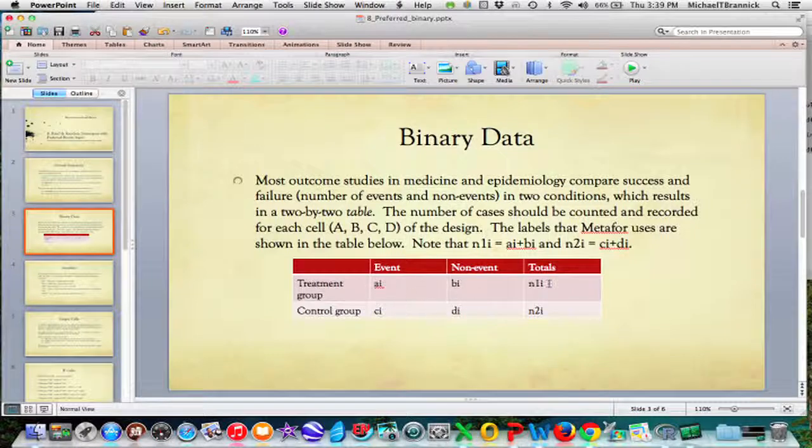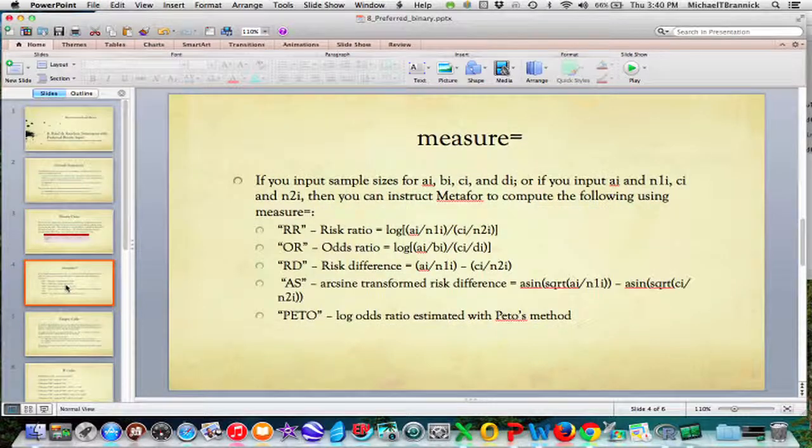A sub i, B sub i. N1 sub i equals the sum of A sub i and B sub i. C sub i, D sub i, and N2 sub i is the sum of these two. You can either input these four or you can input A and N1 and C and N2, because obviously these things add up so it can figure out the missing one.